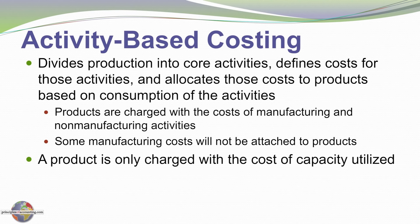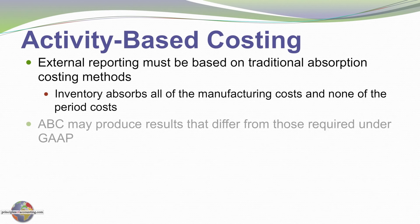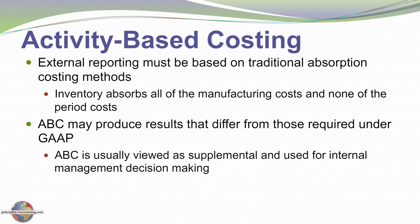Therefore, a product is only charged with the cost of the capacity utilized. External reporting must continue to be based on traditional costing methods, where inventory absorbs all of the manufacturing costs and none of the period costs. Therefore, activity-based costing — or ABC — may produce results that differ from those required under generally accepted accounting principles. Therefore, ABC is supplemental to external reporting and used primarily for internal decision-making purposes.